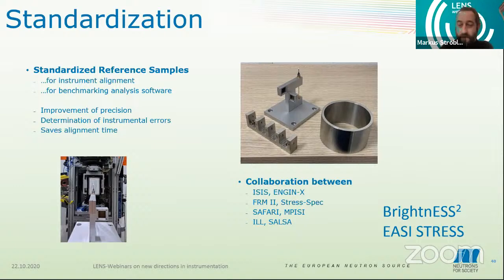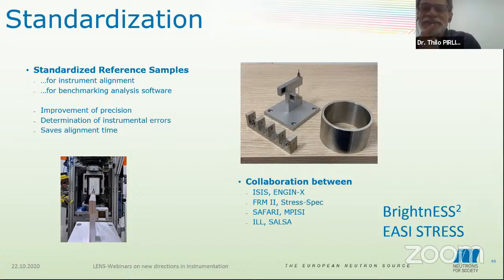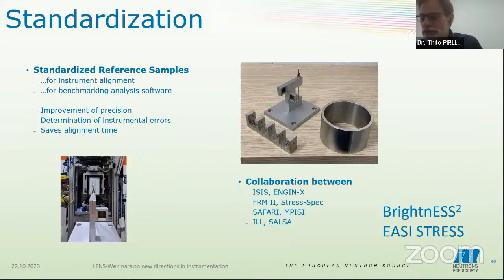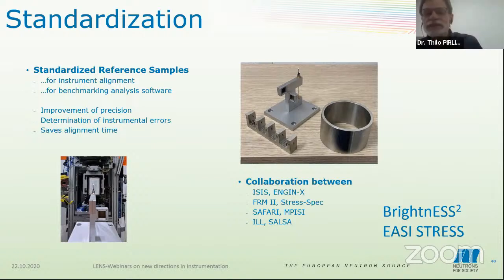Question about in-situ additive manufacturing measurements: how can you disentangle shifts caused by temperature fluctuations from residual strains, and how well can you know the temperature in your gauge volume? We had many sensors around this experiment synchronized with the neutron measurement — the publication is forthcoming. You must have a good temperature measurement to subtract the temperature influence and obtain the real strain from the measured total strain.